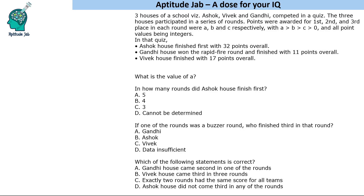The only information we have is that in every round the winning team gets A points, the second-place team gets B points, and the third-place team gets C points. We are given the total points of Ashok house, Gandhi house, and Vivek house. The questions are: what is the value of A, how many rounds did Ashok house finish first, and if one of the rounds was a buzzer round, who finished third in that round? We do not know the number of rounds — the only numerical information we have is the total points.